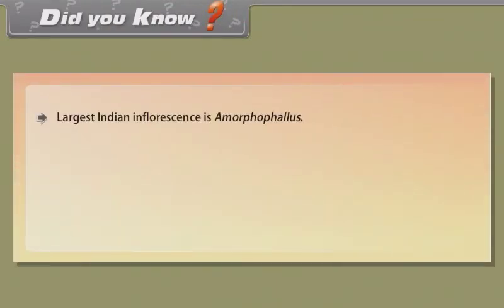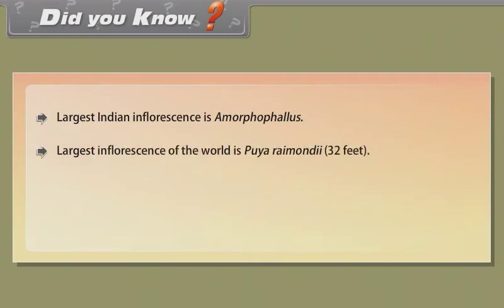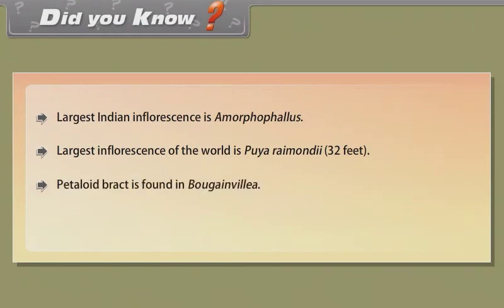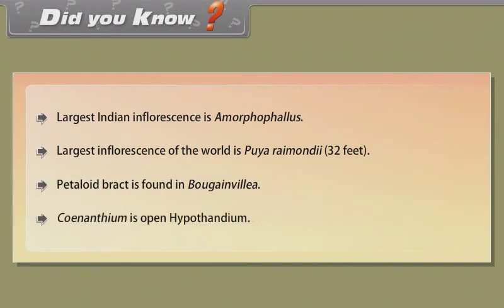Did you know: the largest Indian inflorescence is Amorphophallus. The largest inflorescence of the world is Puya raimondii at 32 feet. Petaloid bract is found in Bougainvillea. Synanthium is an open hypanthodium.